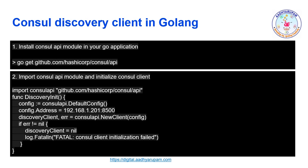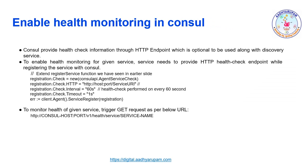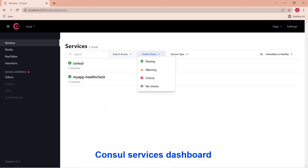As discussed earlier, every service instance needs to register itself with the service registry. This is done using a discovery client. To implement the Consul discovery client in a Go application, install the Consul API module, then import the Consul API and initialize the client in your application. Here is the implementation of registering the service in Golang with Consul. It primarily requires the service name, address, and port details. To enable health monitoring, provide an HTTP health check endpoint while registering the service with Consul. To track and monitor the registered services, open the Consul services dashboard, where you can view all registered services along with their health status.